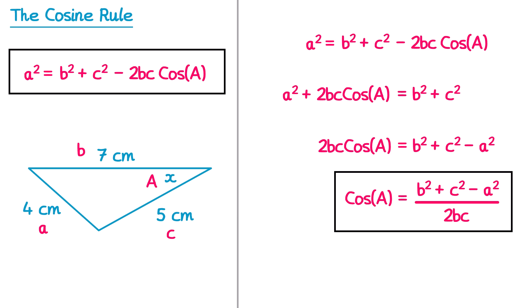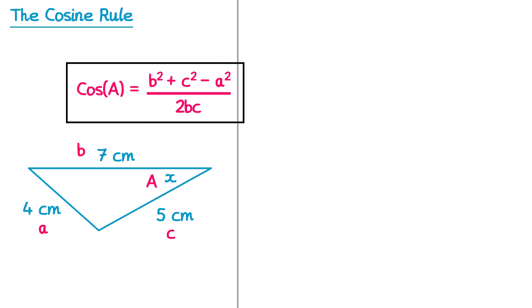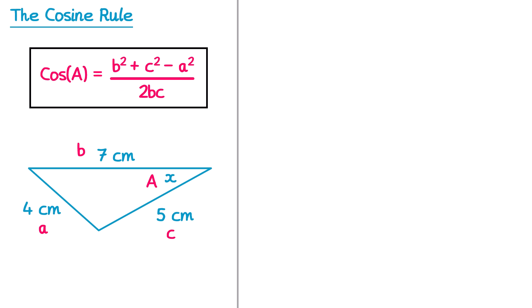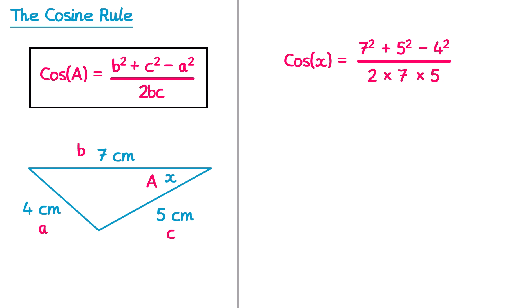This one here is the formula you need to use if you're using the cosine rule to find a missing angle, so let's replace that formula at the top of this question. Now we can continue with the question, substituting into this formula instead. So on the left hand side we have cos of A — but we don't know what capital A is, that's x — so it's cos of x. This is going to be b squared, so that was 7 squared, plus c squared, so plus 5 squared, subtract a squared, so subtract 4 squared, and then all of this is divided by 2 lots of b times c, so 2 lots of 7 multiplied by 5. We leave the left hand side alone — that's cos of x — and this whole right hand side can be typed into your calculator exactly as it is there. If you did that for this question you'd end up with this number here.